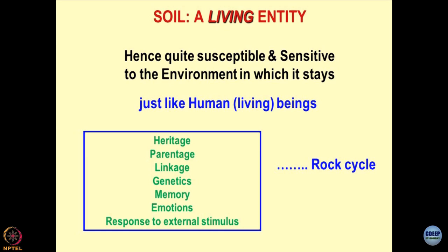This answer comes from the rock cycle — the way the soil was formed. Heritage and parentage is nothing but the way you were formed, in which family you took birth. Linkage is between parents and offspring — rocks and soils. The mineralogy is the same; only the composition of minerals differs because of the formation or recreation of the soils.